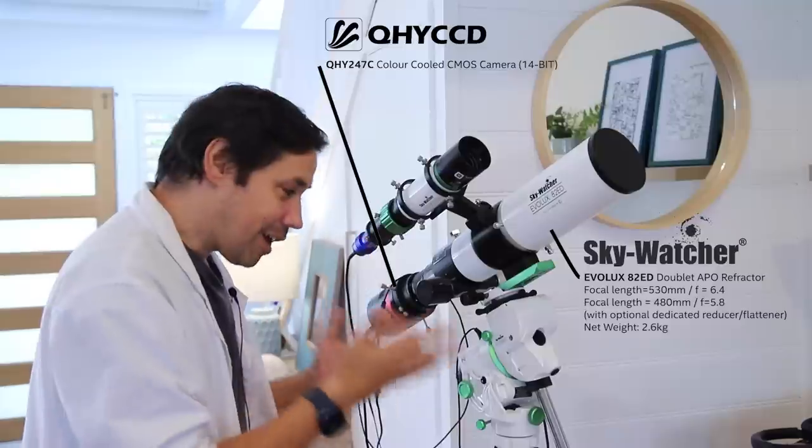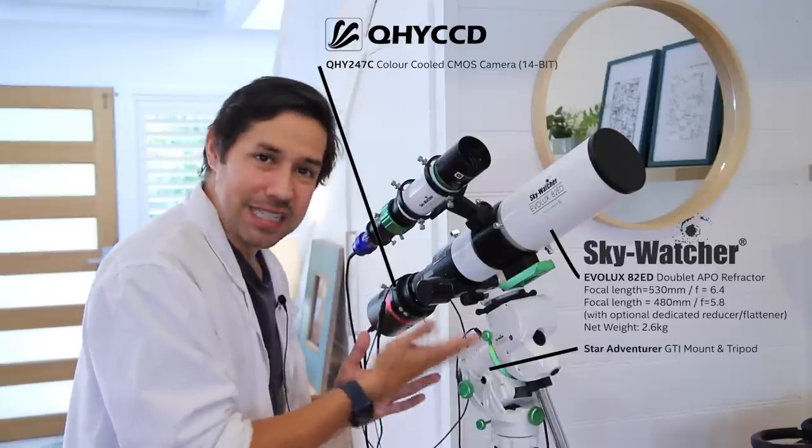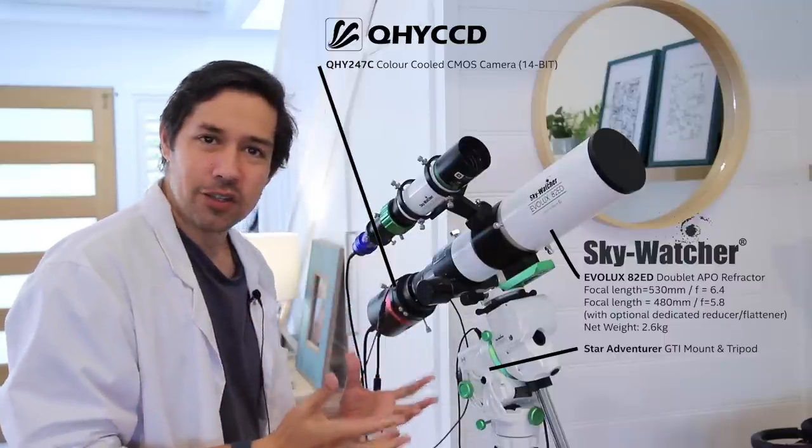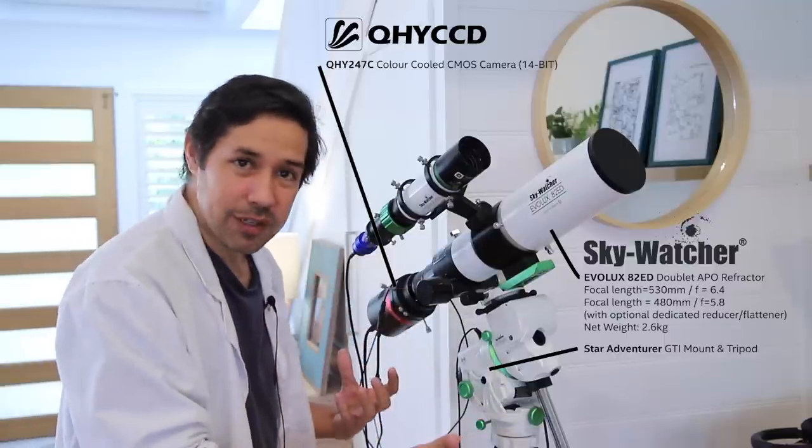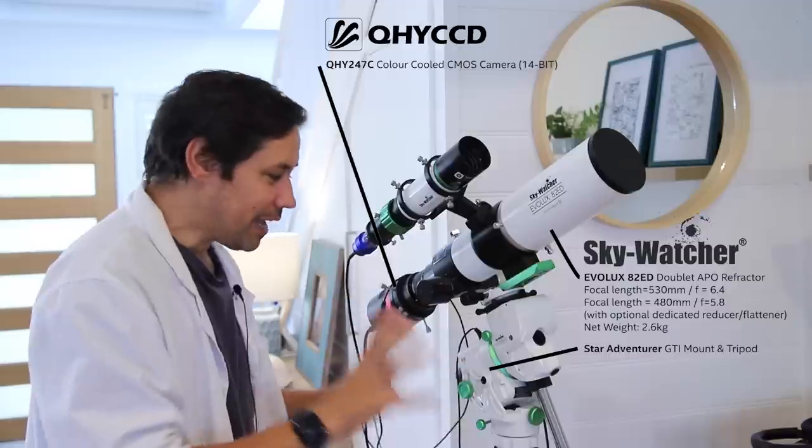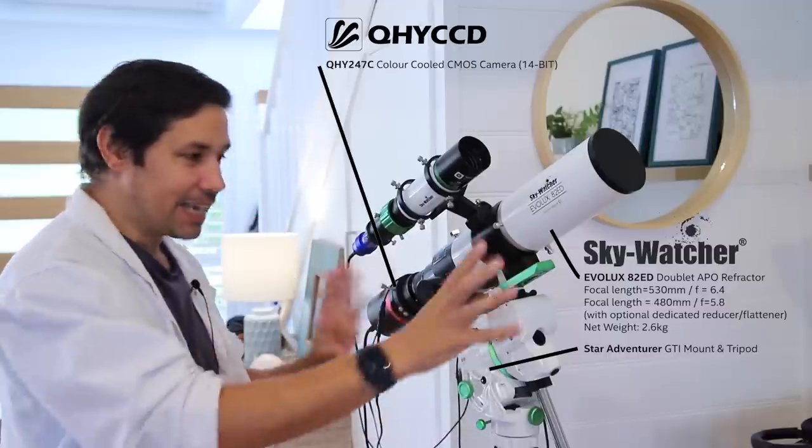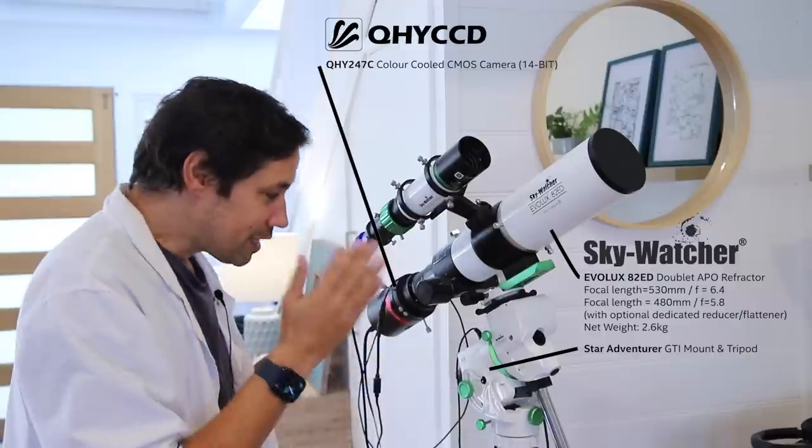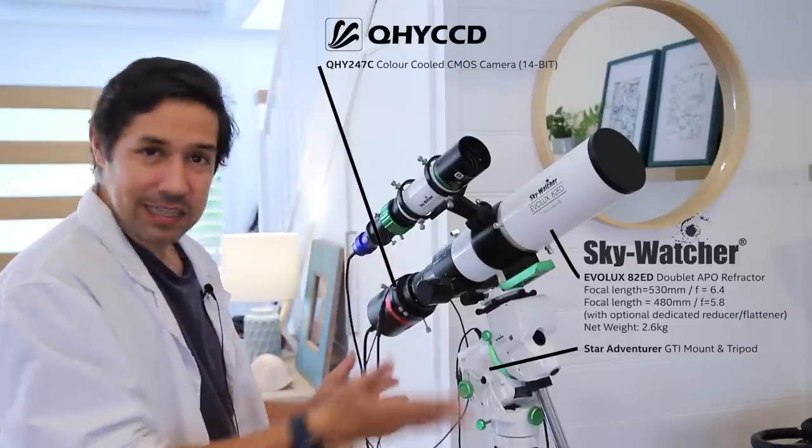But most importantly, we have the Skywatcher Star Adventurer GTI, which is the one that is fully ASCOM compliant, so you can connect a hand controller or a computer to this thing, and you can automate the hell out of it. In fact, I'm running the exact same setup as I used to run my entire observatory on this cheap little mount. And it does it all.